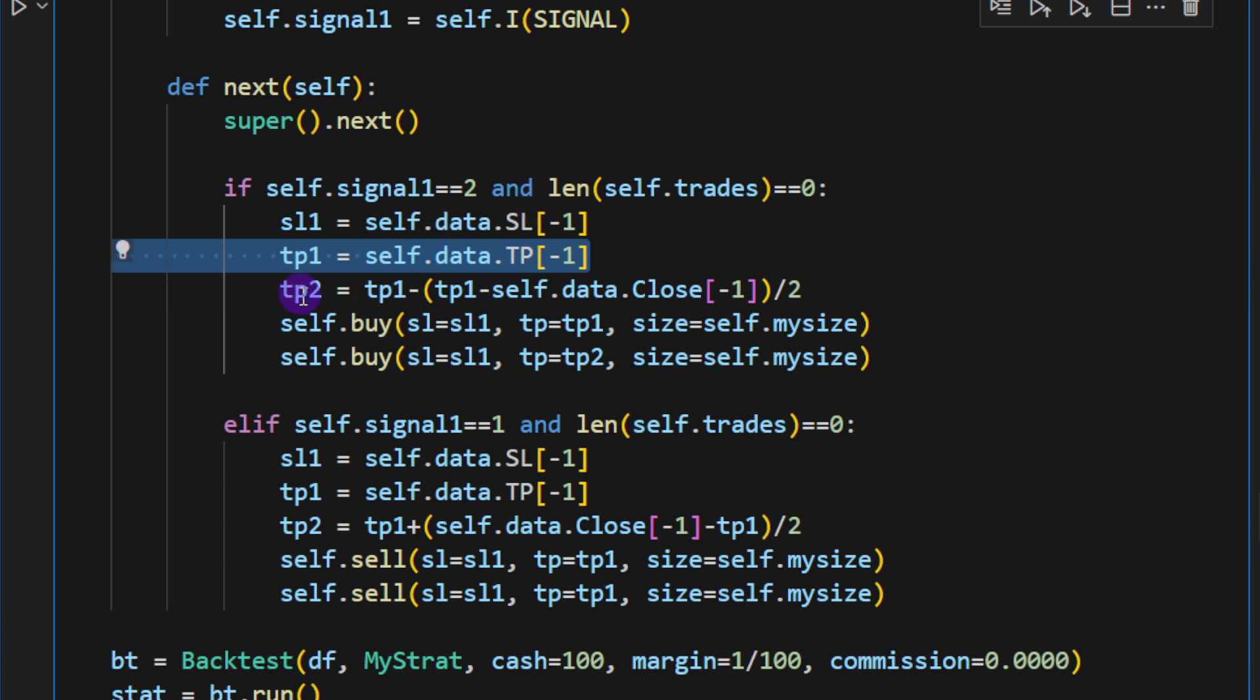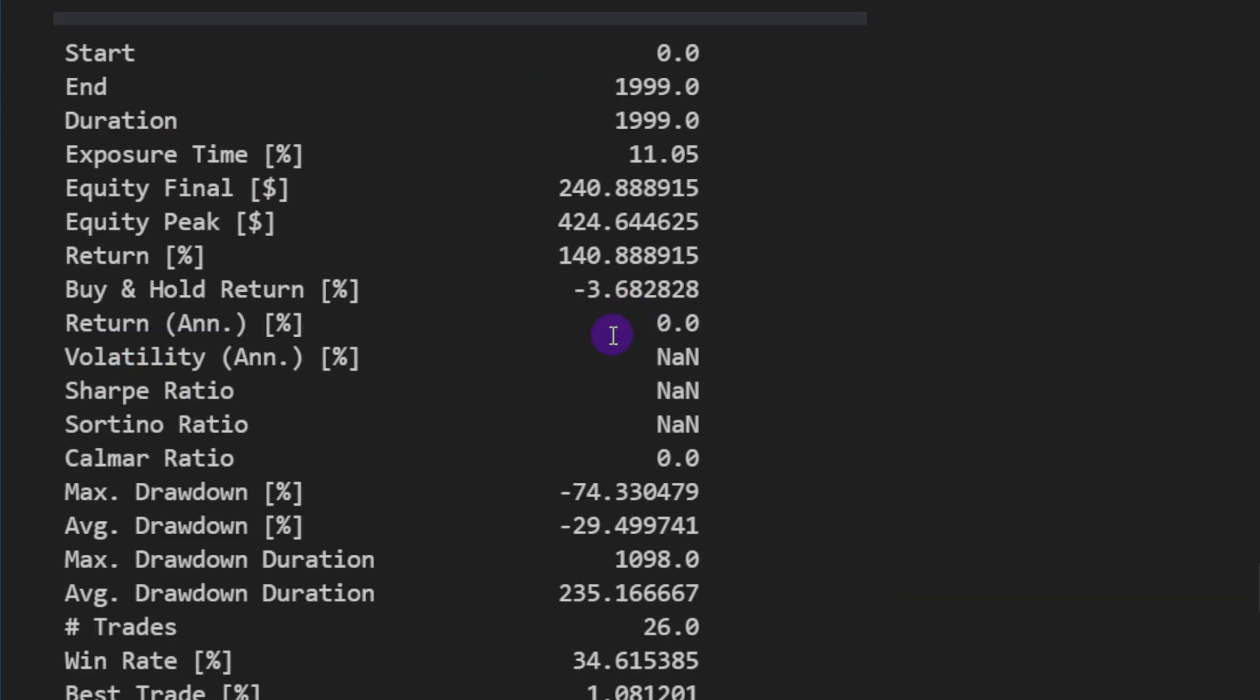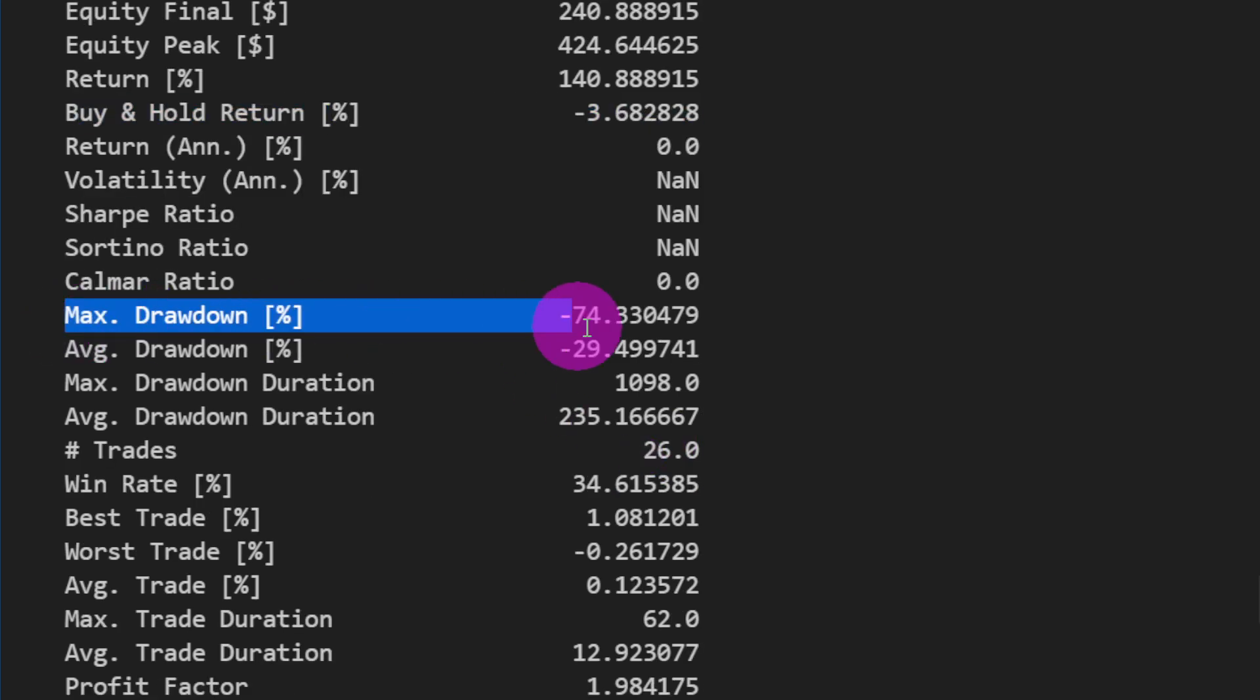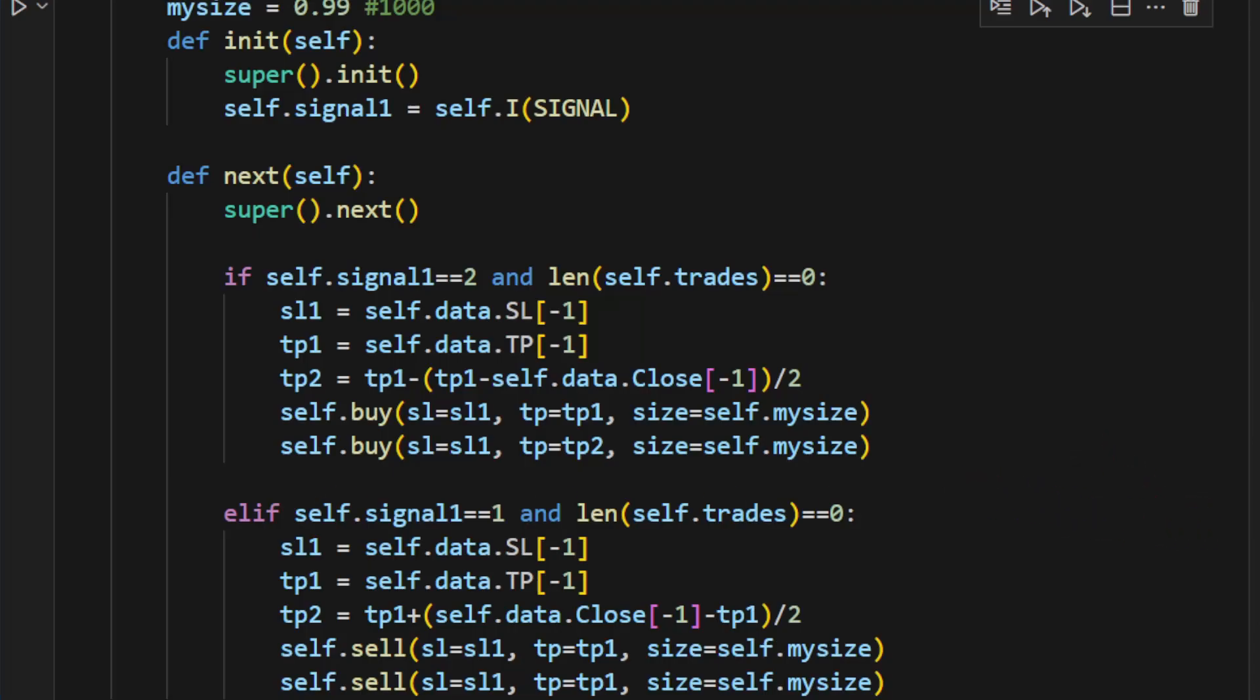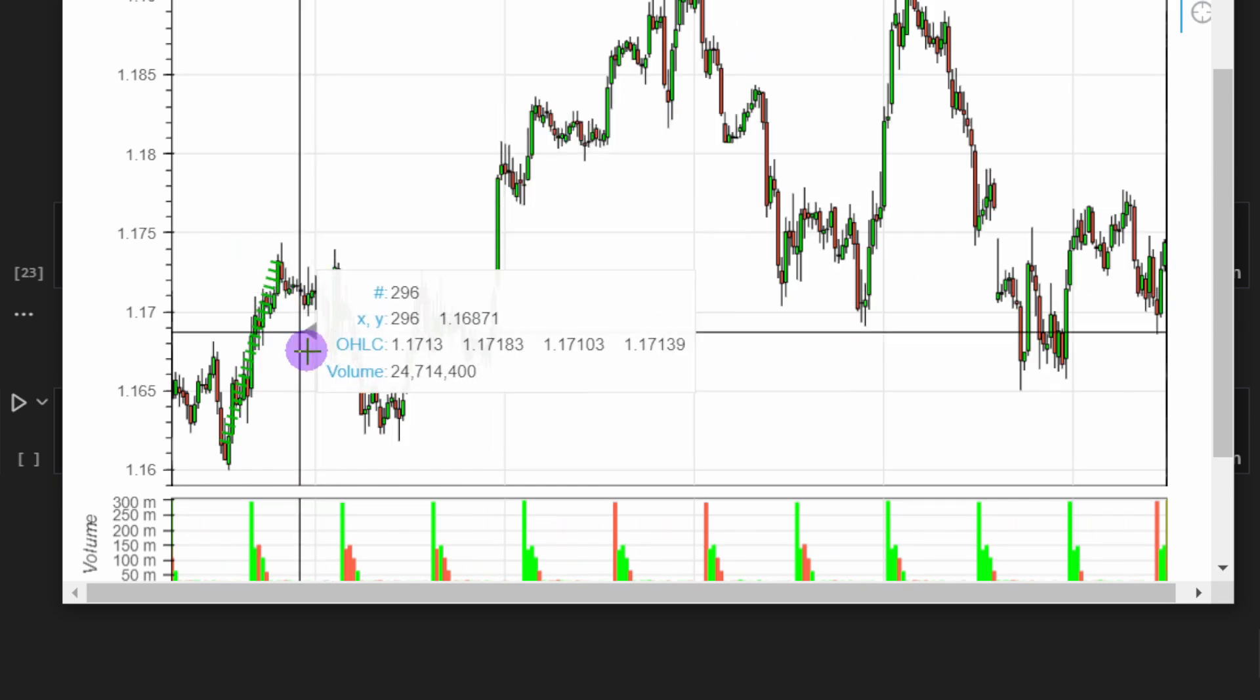For each trade, I decided to use two take profits—one that is close to the price, so it's half of the other one. We have two take profit values and one stop loss value. Take profit 1 is obtained from the levels of the Fibonacci, and take profit 2 is a shorter one that will close half of our position. I'm backtesting with just $100 cash with a margin 1 over 100. We're obtaining something around 140% in return.